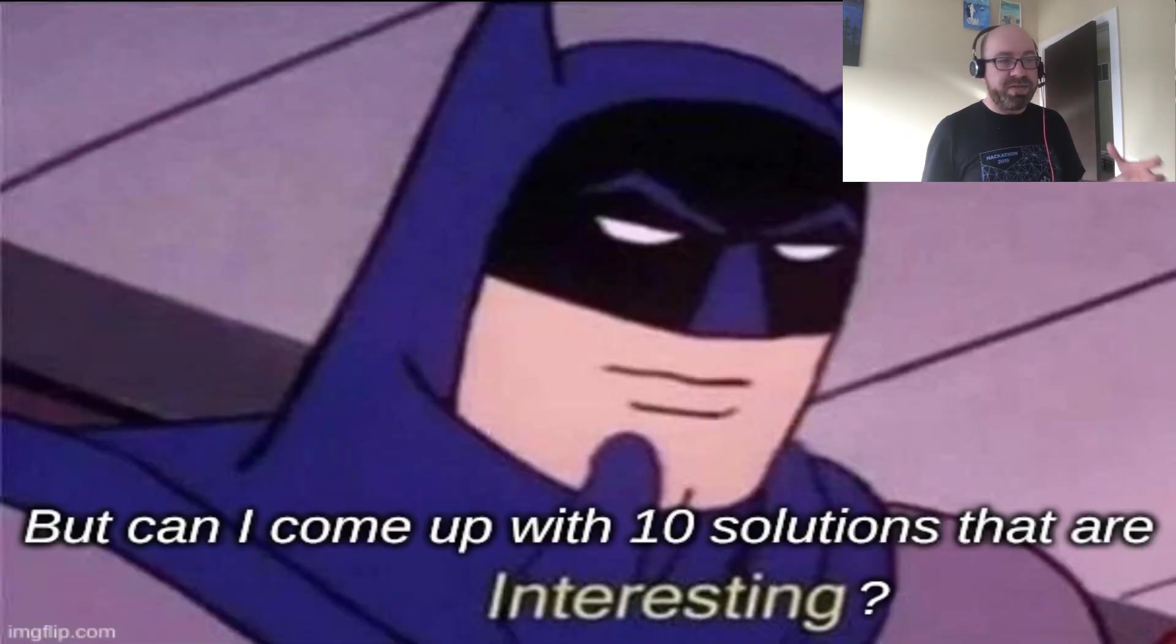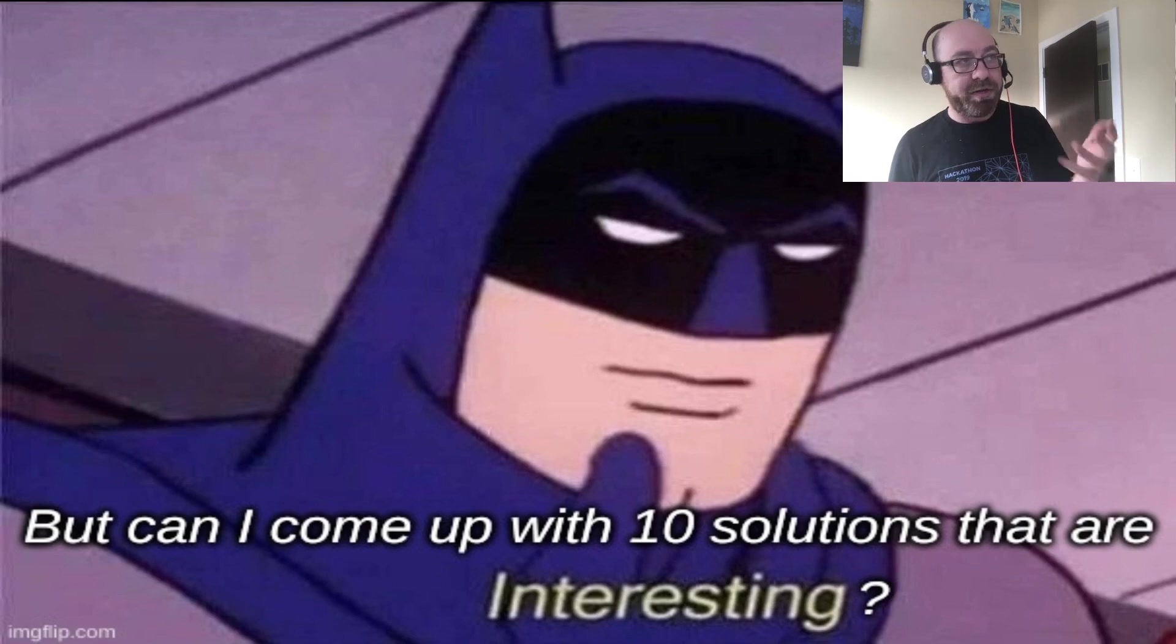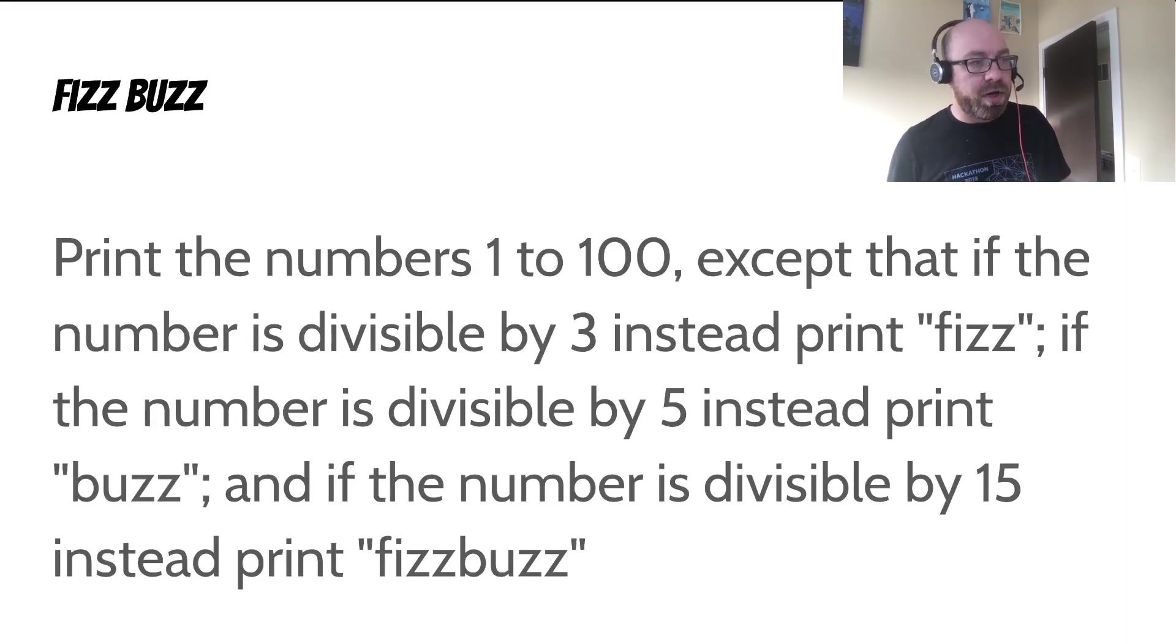Was I able to come up with 10 solutions that are all interesting? I like to think so, but you can judge. Just to remind you again, the problem is to print the numbers from 1 to 100, except that if the number is divisible by 3 print Fizz, divisible by 5 print Buzz, and if it's divisible by 15 instead print FizzBuzz.